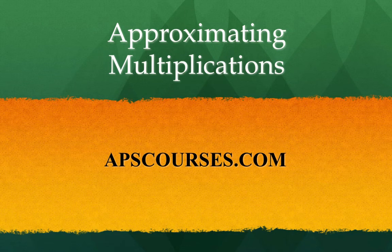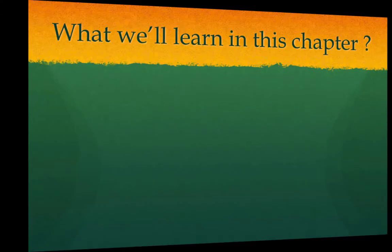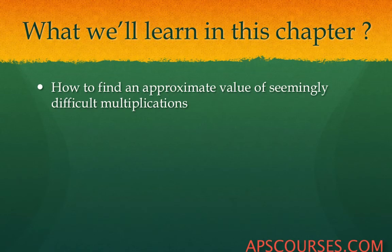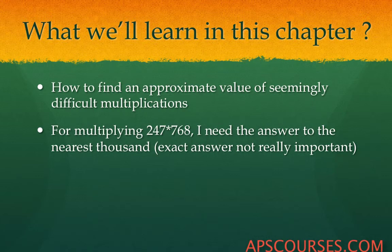Approximating Multiplications. Visit APSCourses.com for more online courses. In this video, we will learn how to find an approximate value for complex calculations. For example, if we have to multiply 247 by 768 and need the answer to the nearest 1000, we need an approximate answer, not the exact answer, and we will follow the methods given in this video.